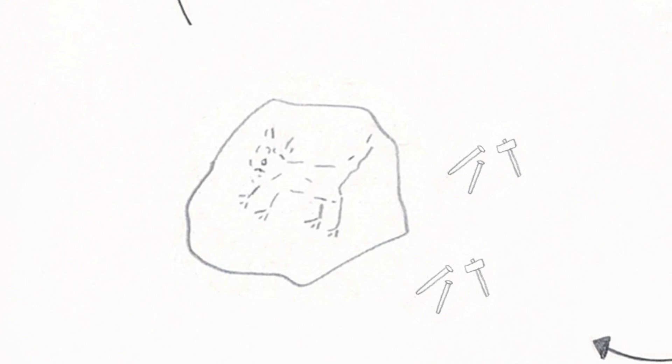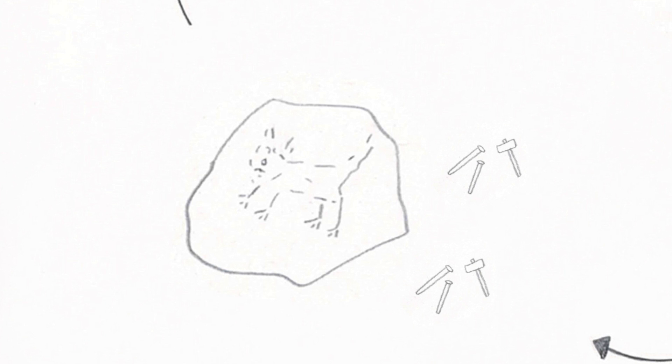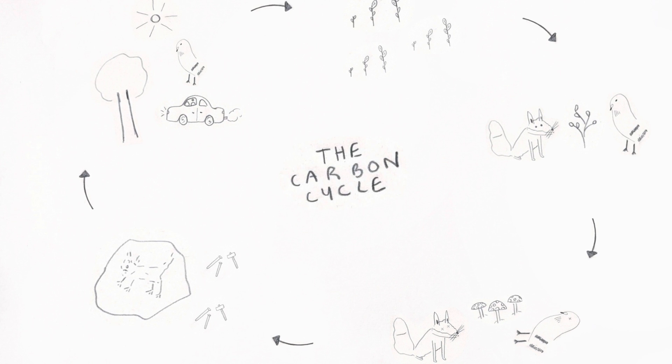Sometimes, plants and animals become fossilized and the carbon in their bodies can also be used as fuel. And that is the carbon cycle.